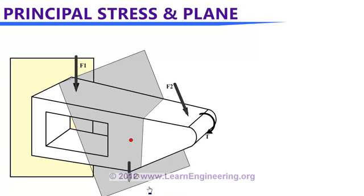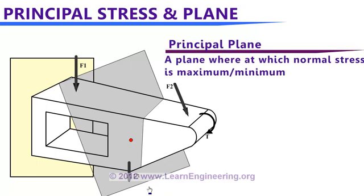In short, you can define the principal plane as a plane at which normal stress value is maximum or minimum. This is a three-dimensional problem, and stress analysis of a 3D problem is pretty complicated. So we will take a 2D problem, do stress analysis of that 2D problem, learn how to predict principal plane and principal stress for a 2D case, and then come back to the 3D problem.